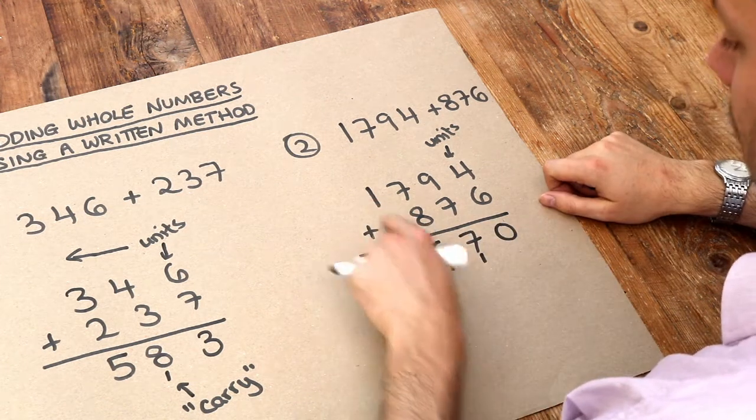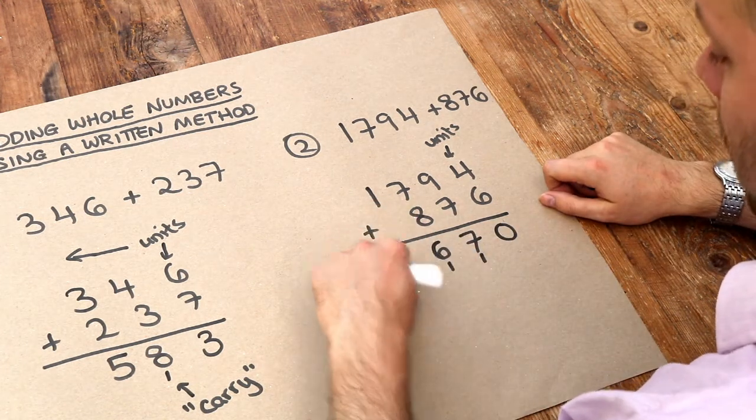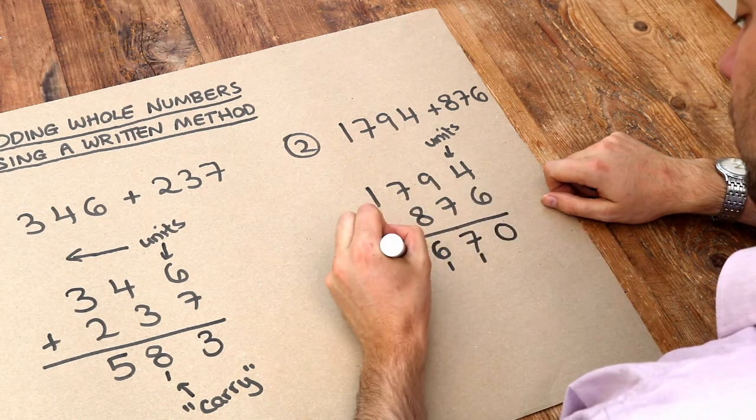And then finally we've got 1 plus nothing, so it's still 1, but plus that carry of 1 we get 2.